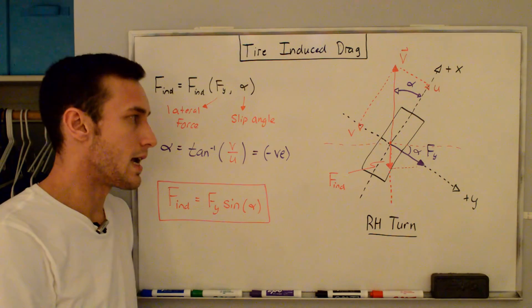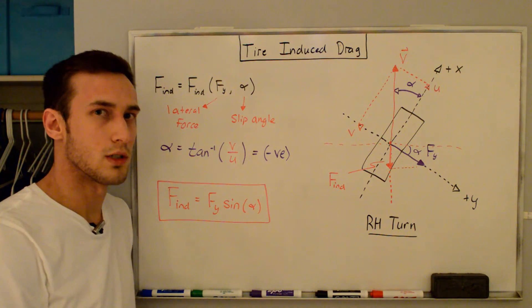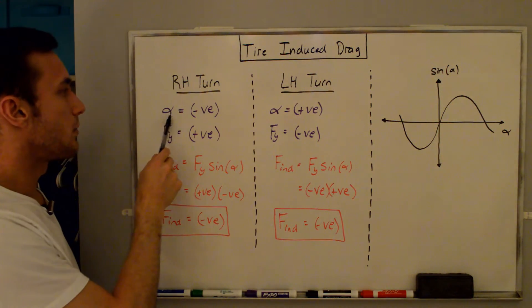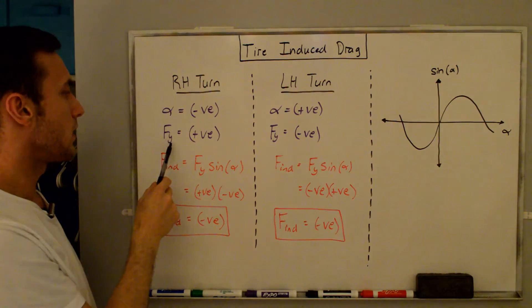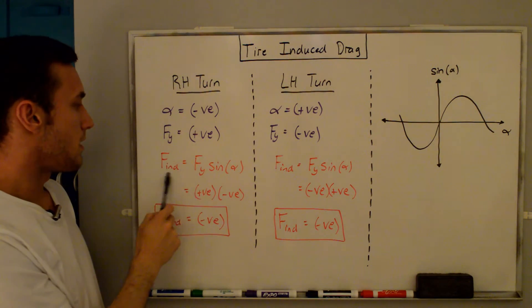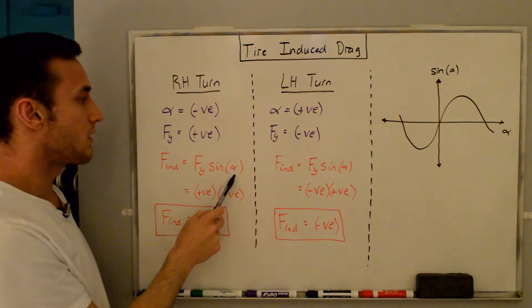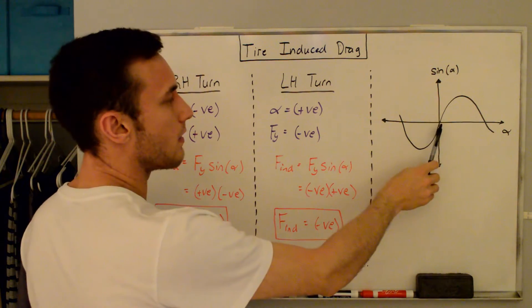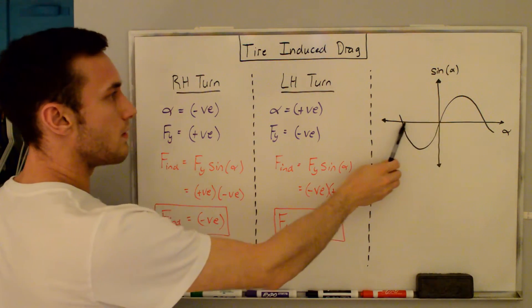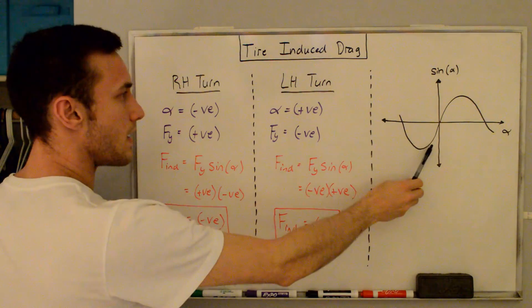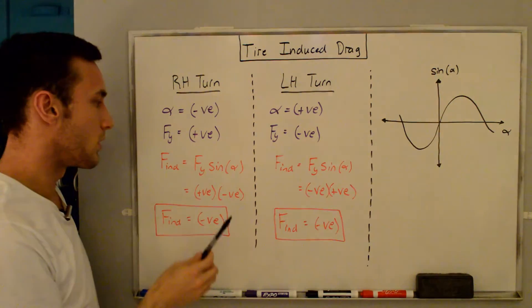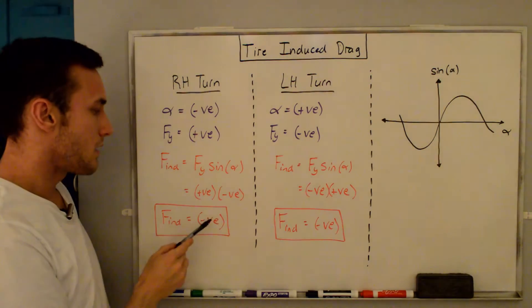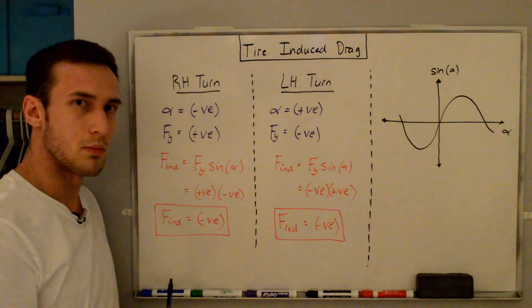For this force to oppose the motion of the tire in the direction of the velocity, it has to be negative. Does it end up being automatically negative for both left-hand and right-hand turns? Starting with the right-hand turn: the slip angle is negative and the lateral force is positive. The sine of a negative angle is negative, so we have a positive lateral force times a negative sine of the slip angle, which gives us a negative induced drag. So our induced drag does indeed end up being negative.